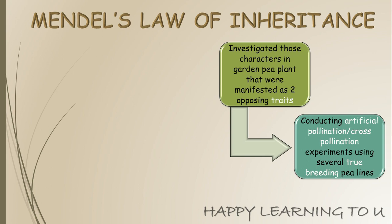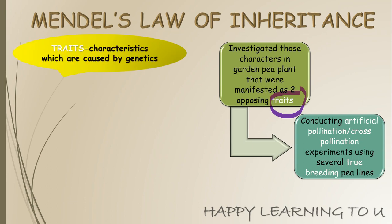Now let's look at what we mean by traits. Traits are nothing but characteristics which are caused by genetics. Whatever characteristics we exhibit — like the shape of a face, hair color, skin color — these are characteristics. Next is what is cross-pollination.